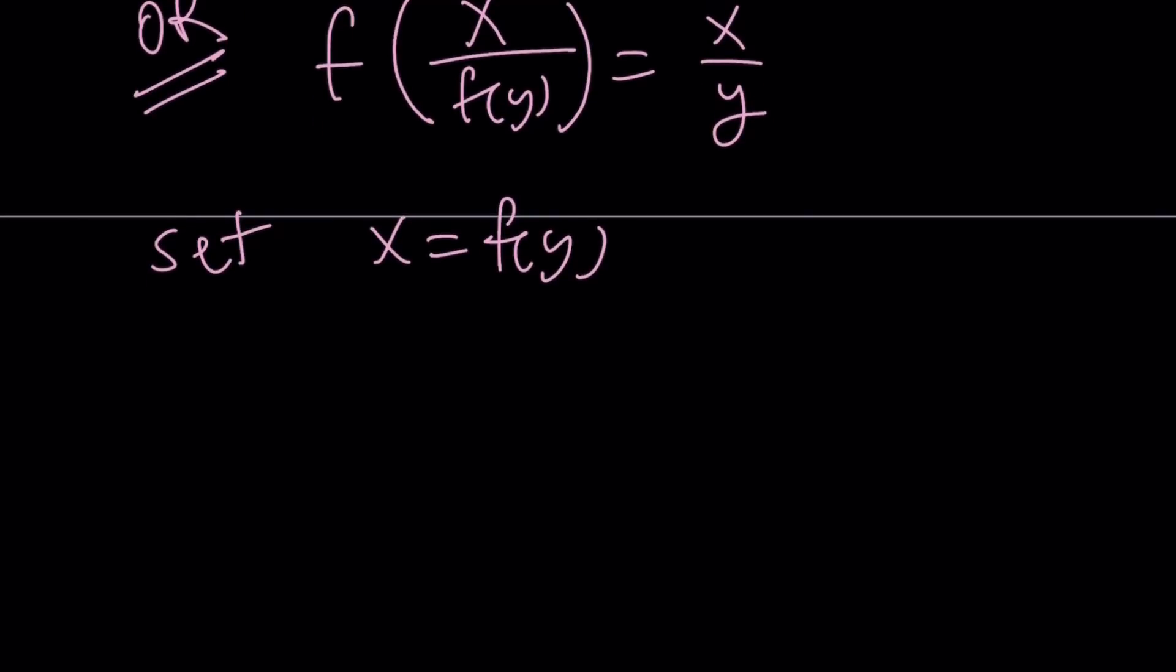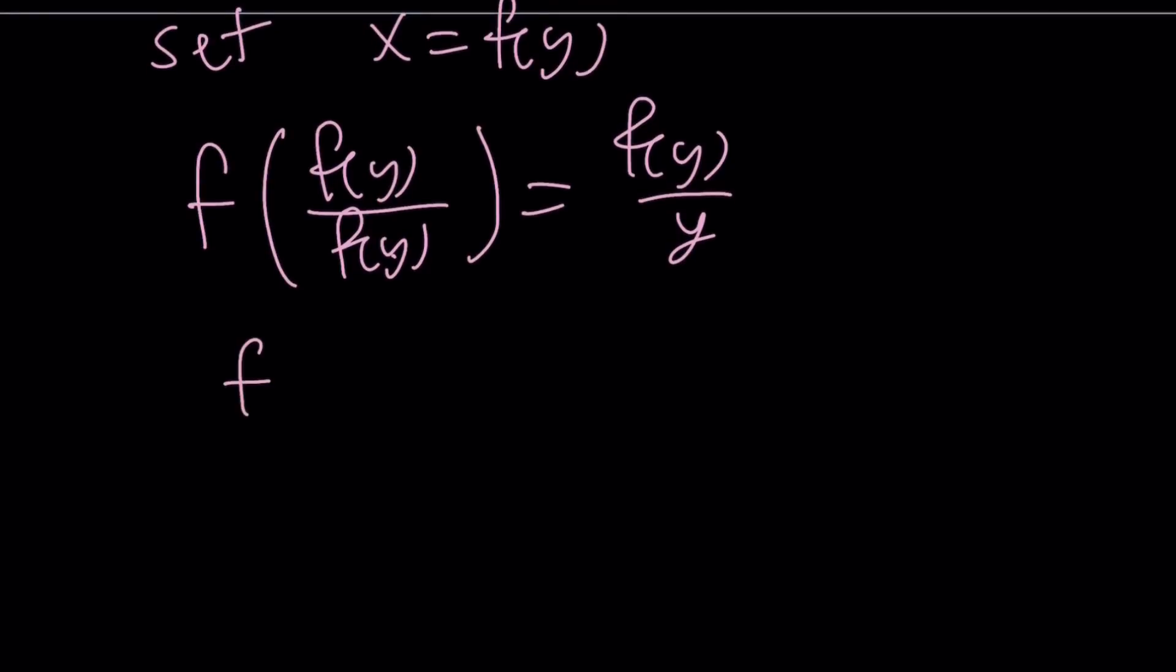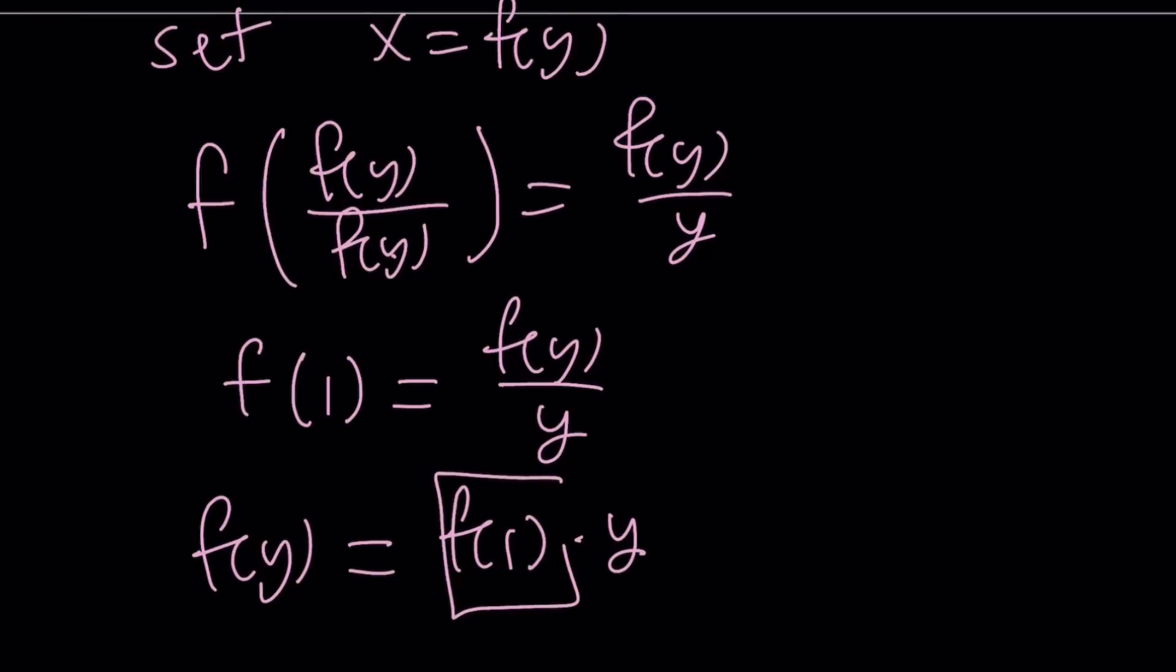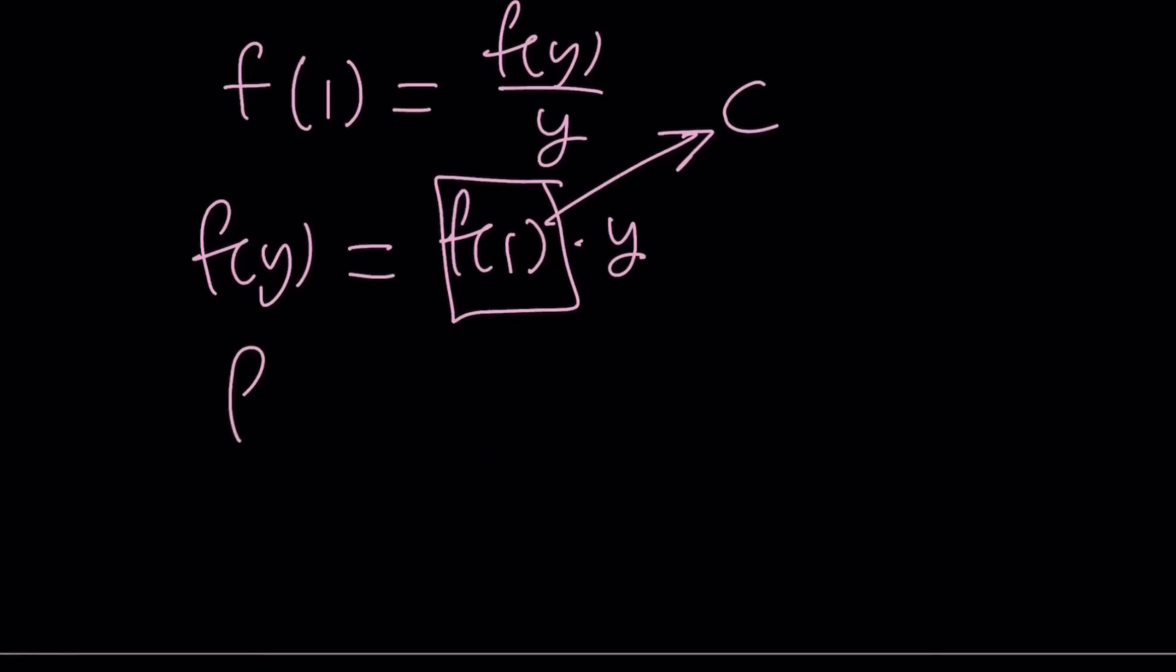And from here, we get the following. If you replace x with f of y, you're going to get f of y over f of y equals f of y over y. But f of y over f of y is 1 because they're not 0, hopefully. Then we get f of 1 equals f of y over y. And this gives us f of y equals f of 1 times y. Now we can go ahead and replace f of 1 with c because it's a constant. And we get the same thing from here.